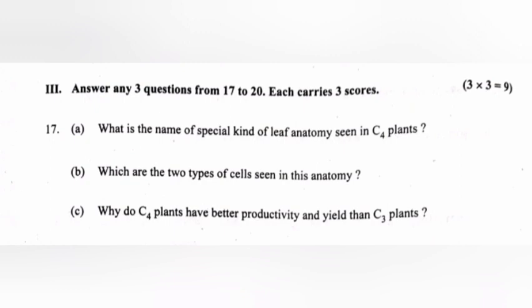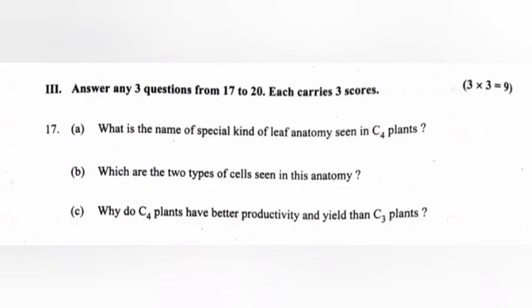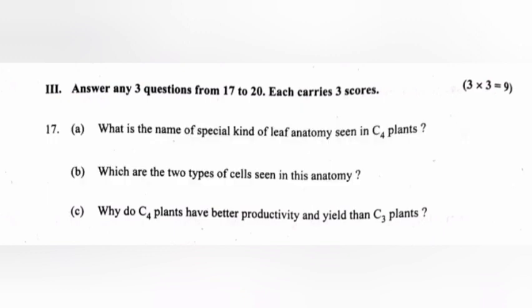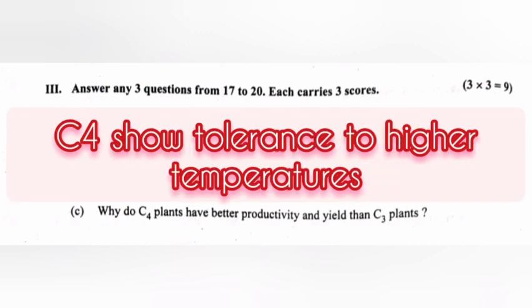A) What is the name of the special kind of leaf anatomy seen in C4 plants? Answer: Kranz anatomy. B) Which are the two types of cells seen in this anatomy? Answer: mesophyll cells and bundle sheath cells. C) Why do C4 plants have better productivity and yield than C3 plants? Answer: C4 plants lack photorespiration, or C4 shows tolerance to higher temperatures.